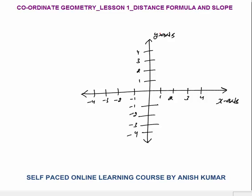First of all, how to draw the coordinates in the axis. For example, I am taking point A. This point's coordinates are 1 and 2. This 1 is called the x-coordinate and 2 is called the y-coordinate. Point A is at (1, 2): x-coordinate is 1, y-coordinate is 2.